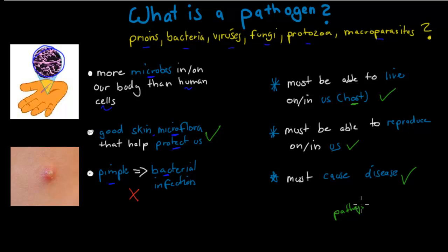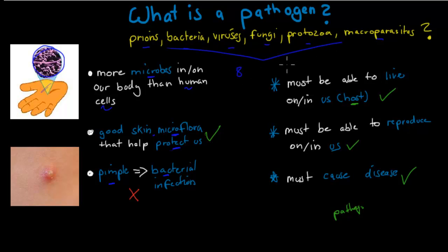For example, looking at our skin, most of our skin microflora would not be pathogens. But the microbe that causes pimples would tick all three, and thereby it would be a pathogen. Each of these classes of microbes — some would be pathogenic, some bacteria would be pathogens but not all of them. All viruses are actually pathogenic, but some other groups would not be. If they tick all three criteria, they are a pathogen.